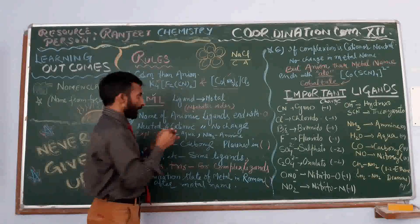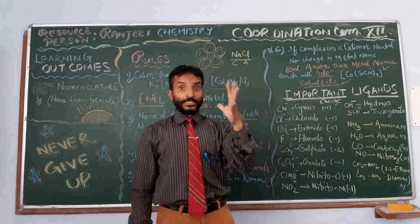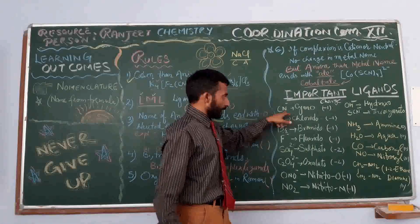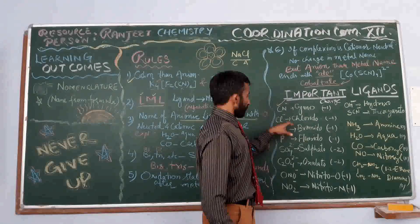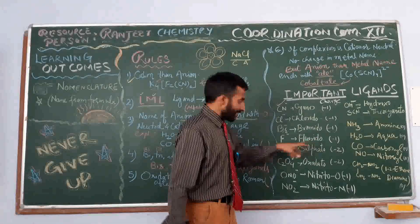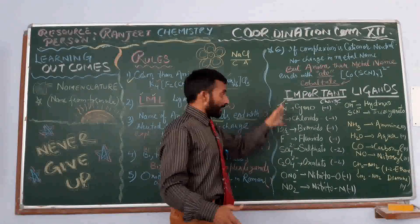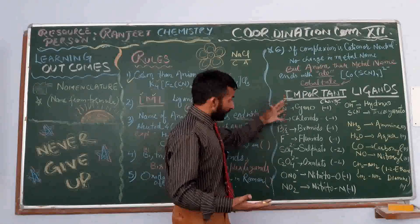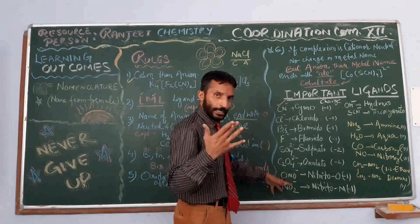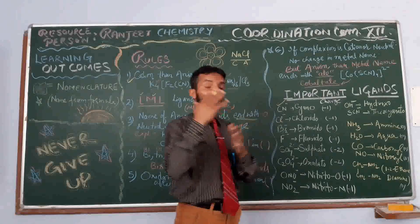Next rule: the name of anionic ligands ends with the suffix O. Whenever we write the name of a negatively charged ligand, the name ends with the suffix O. For example: cyanide becomes cyano, chloride becomes chlorido, bromide becomes bromido, fluoride becomes fluorido. These are negatively charged ligands. Sulphate becomes sulfato. When they act as counter ions, their usual names are cyanide, chloride, bromide, sulfate, oxalate. But when acting as ligands, negatively charged ones end with the suffix O.